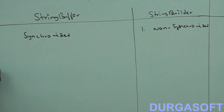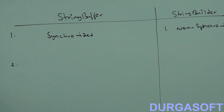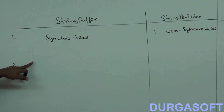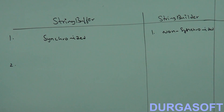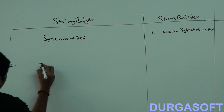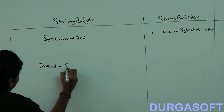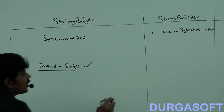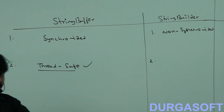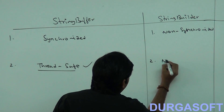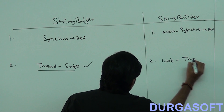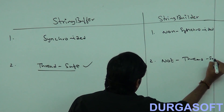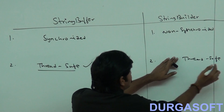Second point: at a time, how many threads are allowed to operate on a StringBuffer object? Only one thread. That's why StringBuffer is by default thread-safe. But at a time, how many threads are allowed to operate on StringBuilder? Multiple threads, because the methods are non-synchronized. That's why StringBuilder is not thread-safe.